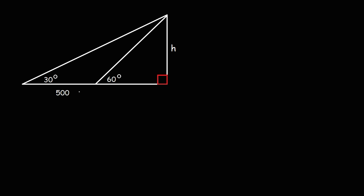So we know that this portion is 500. And given the two angles, 30 and 60 degrees, what is the value of h of this larger right triangle? Feel free to pause the video and try this problem.